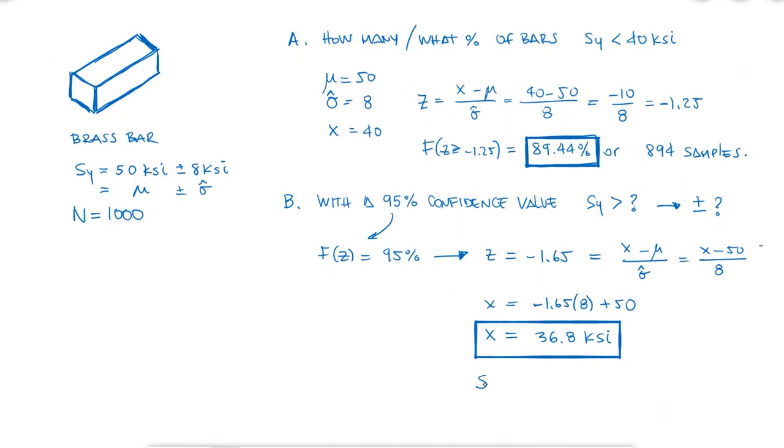I can state that my worst case scenario includes a bar that has a yield strength that is 13.2 KSI lower than expected, or that it has a worst case scenario uncertainty of 26.4%, which would allow me to do all the design factor calculations.